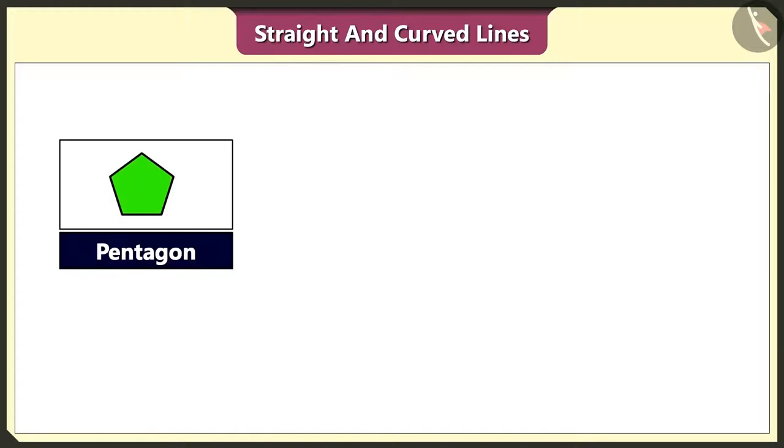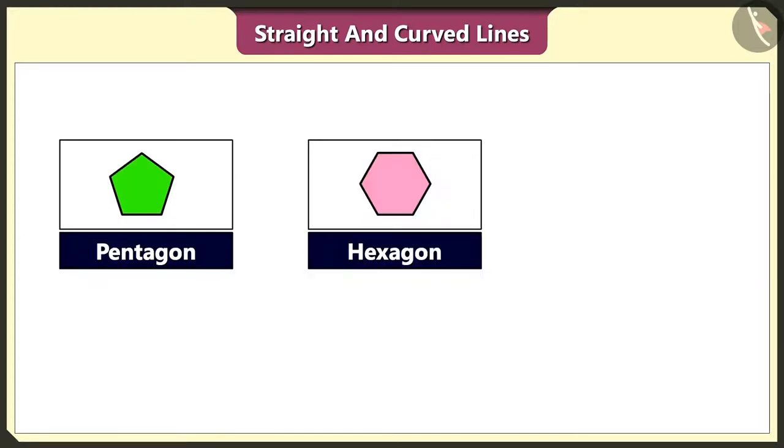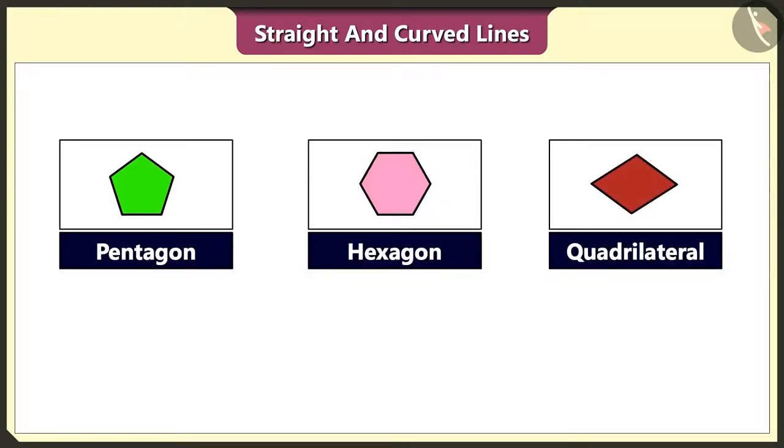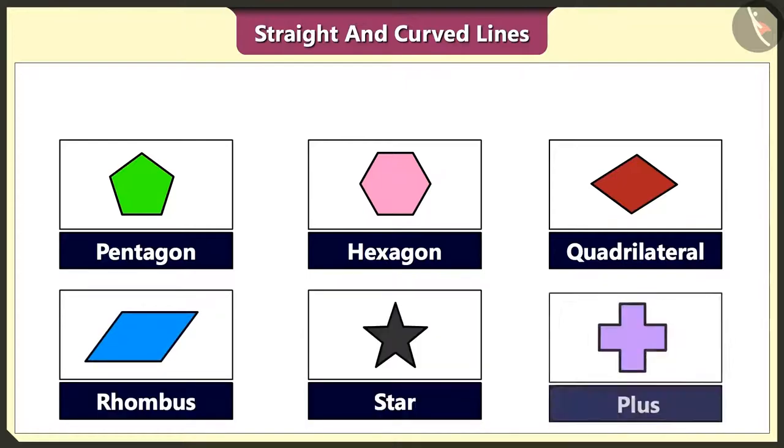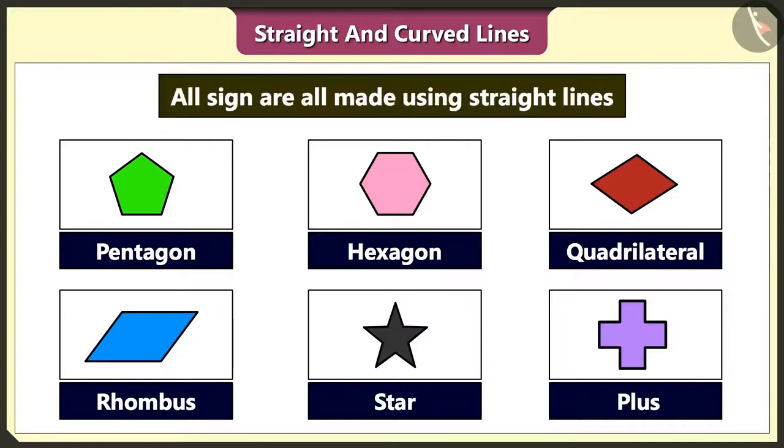You are right. Do you know that pentagon, hexagon, quadrilateral, rhombus, star and plus sign are all made using straight lines? Yes.